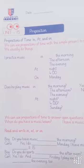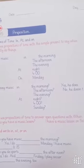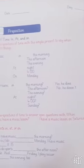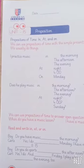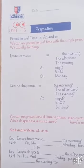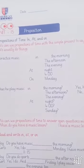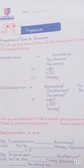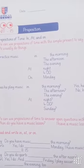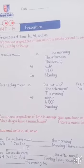We can use prepositions of time with the simple present to say when we usually do things. For example: I practice music in the morning, the afternoon, the evening, at night, at four, or on Monday.